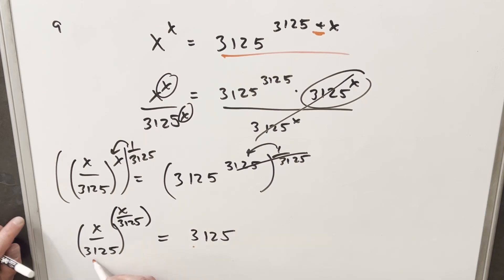So now we have the same base and the same exponent over here on the left. This number may be familiar to you. And what this is, 3125 is the same thing as 5 to the 5.